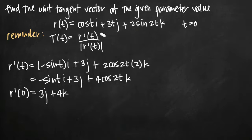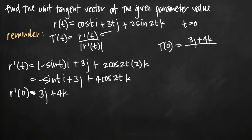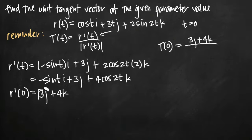We plug r prime of zero into our unit tangent vector equation: T(0) equals 3j plus 4k in the numerator, divided by the magnitude of r prime of zero in the denominator. The magnitude gives us the length of the vector 3j plus 4k. We calculate it using the distance formula — squaring each coefficient, adding the squares together, and taking the square root.